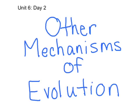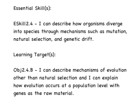Today's lesson is on the mechanisms of evolution other than natural selection. Keep in mind that the word mechanism just means a way in which something happens. Today's objective is Objective 2.44b: I can describe mechanisms of evolution other than natural selection, and I can explain how evolution occurs at a population level with genes as the raw material.